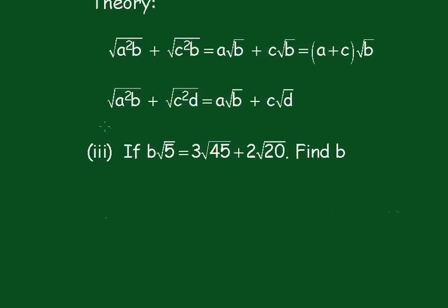Let's have a look at this 3 root 45, and that's going to be 3 times, now this will be a 9 times 5, plus 2, this is going to be a 4 times 5. So this will be a 3 times 3 root 5, plus a 2 times 2 root 5.